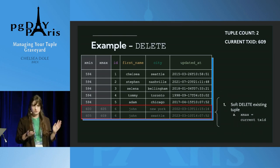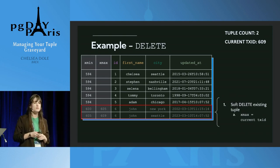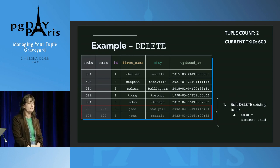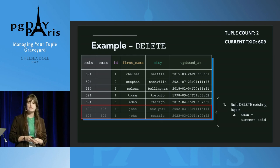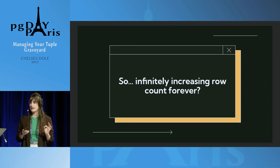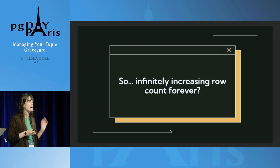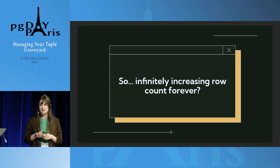An actual delete is just half of what we did for update — all we do is the soft delete, updating Xmax for the tuple to the current transaction ID 609. So just inserting, or only updating Xmax — is that just an infinitely increasing row count to the end of time? Luckily no — we do have something called vacuum.